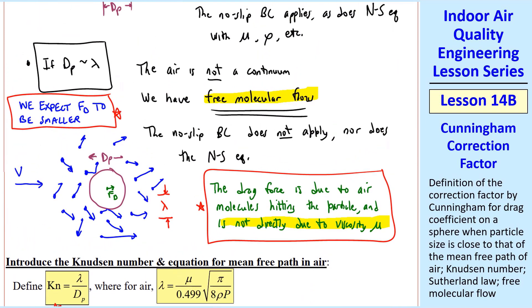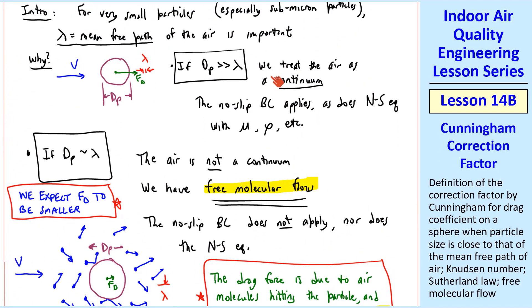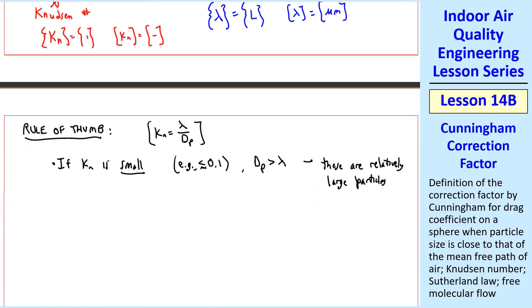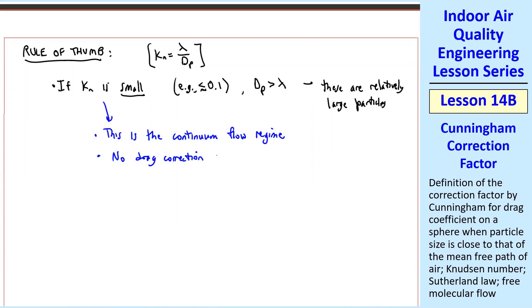This would be similar to this first case that I described here, where we treat the air as a continuum. So this case is the continuum flow regime, and no drag correction is necessary. For example, for creeping flow over a sphere, we showed in a previous lesson that cd was 24 over Reynolds number, so this is valid for small Knudsen number.